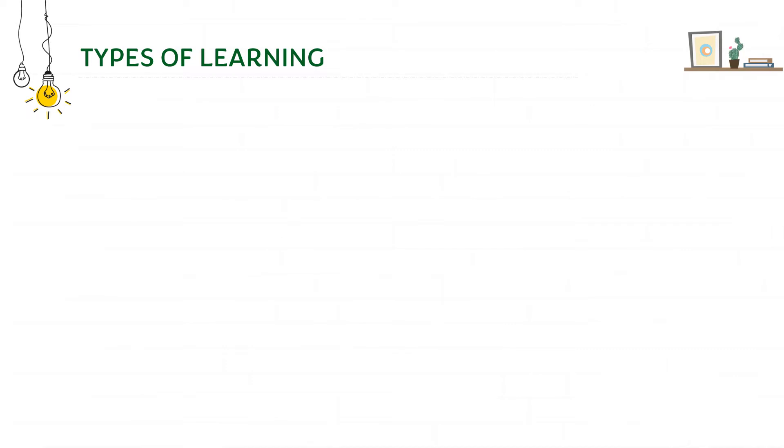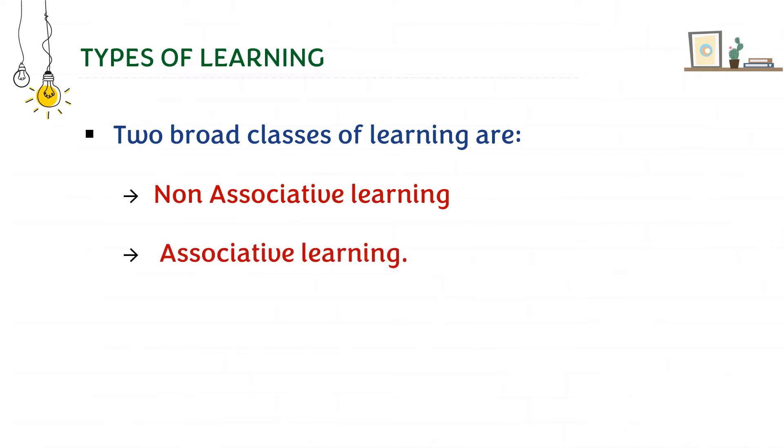Next you can move on to write about the types of learning. There are two broad classes of learning which are non-associative learning as well as associative learning, of which we are going to discuss mainly about non-associative learning.